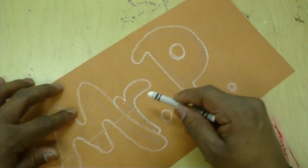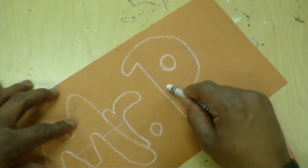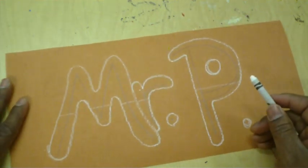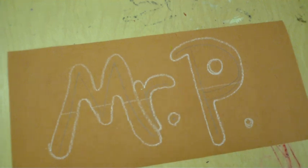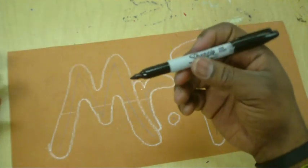Also, while we have the white crayon in our hands, let's go ahead and mark the middle of our letters. When we get to the oil pastels, we want to actually use two different colors, one for the top and one for the bottom. And I like to go ahead and mark where those two colors are going to be.